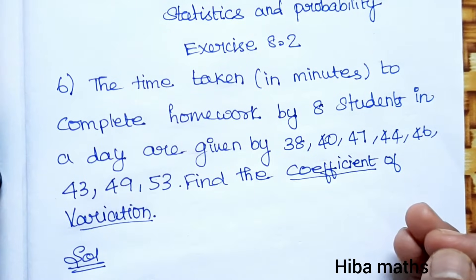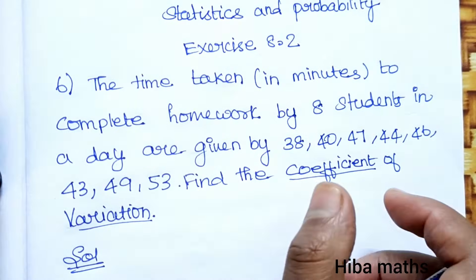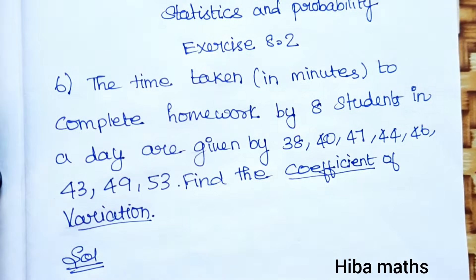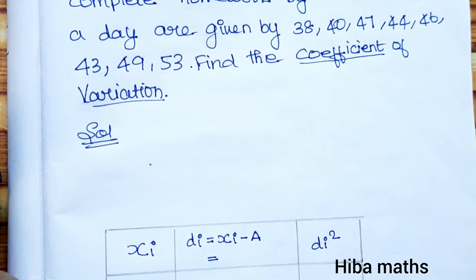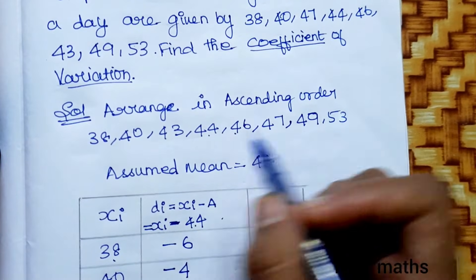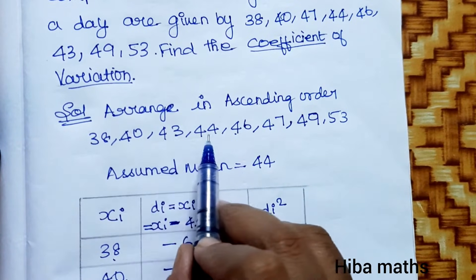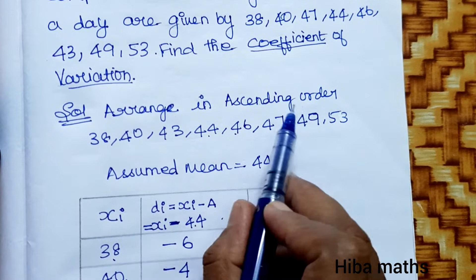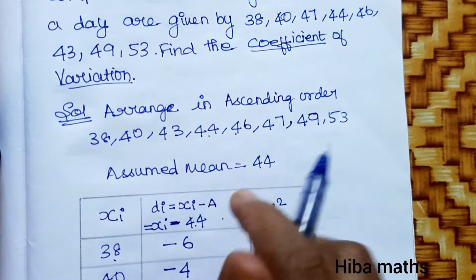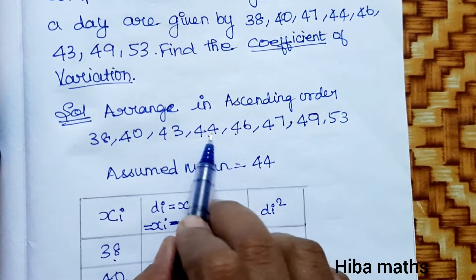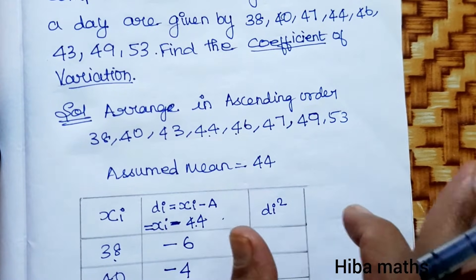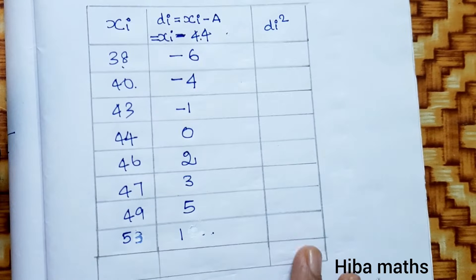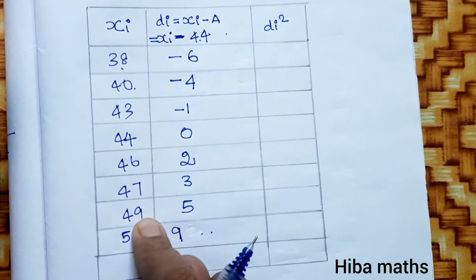This problem is similar to the last one but with slightly different values. First, arrange in ascending order: 38, 40, 43, 44, 46, 47, 49, 53. Now assume mean is the center term. Since we have two middle terms, 44 and 46, we assume mean is 44 and solve using the table column method.